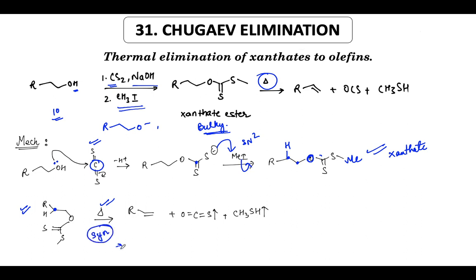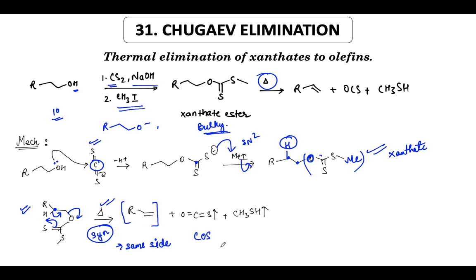Syn means same side. So both the electrofugal group — the proton — and the nucleofugal group are leaving from the same side. We draw the molecule in the particular conformation so we can visualize this. The products are the alkene and COS — carbonyl sulfide — which is essentially a replacement of oxygen with sulfur in carbon dioxide, a simple linear gas.